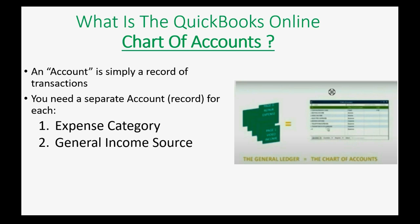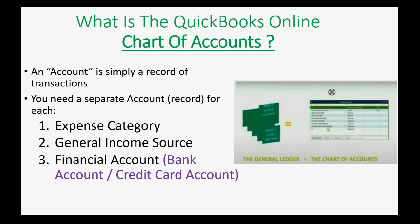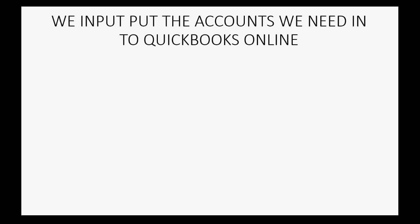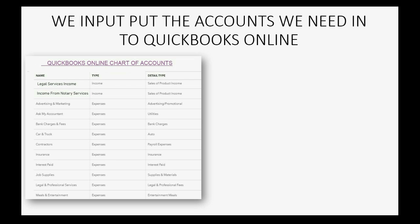You need a separate account for each income source, like income from bartending compared to income from repair. You also need a separate account and record for each financial account you have, like each separate bank account or each separate credit card account. And of course you should keep a separate account record for the cash that you receive and pay. Now we will put the accounts into QuickBooks Online that we need for our situation. The good news is that QuickBooks Online already comes with a Chart of Accounts listing the common expenses a typical company would have.